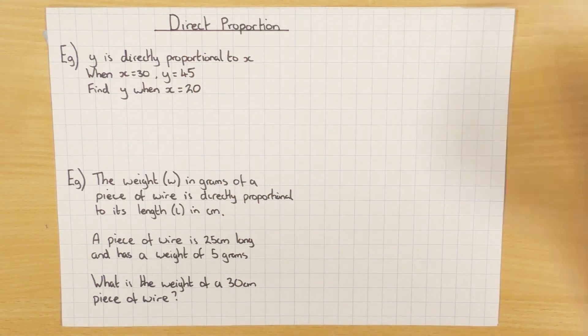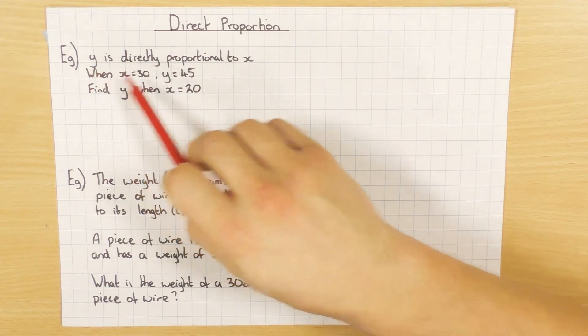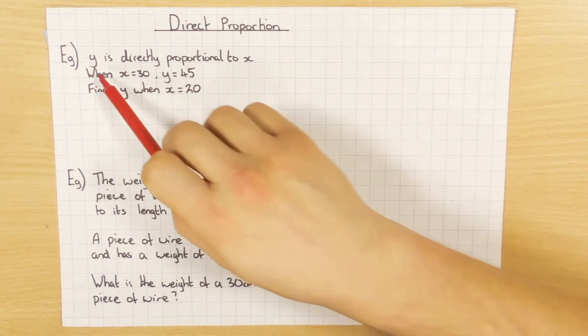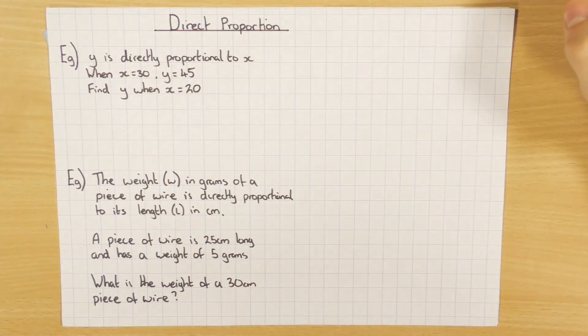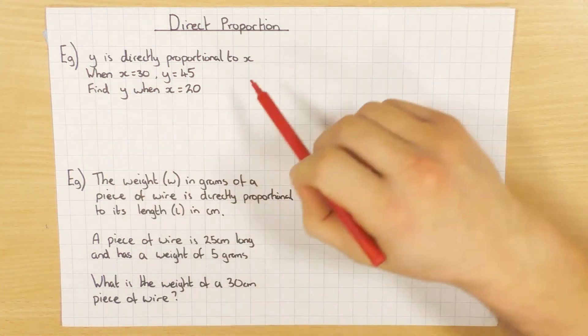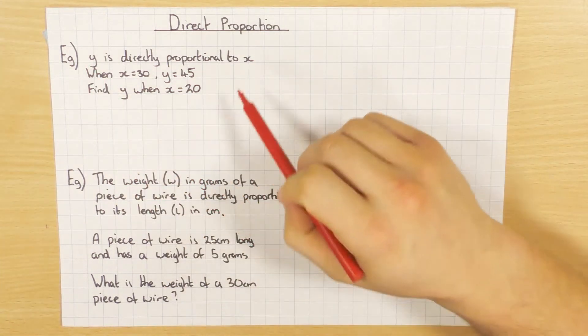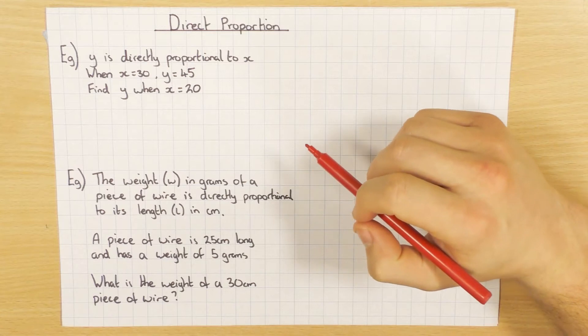So when you have something, in this case it's just called y and x, just nice and simple, if they are directly proportional it just means that as one increases, so as y increases, x also increases as well.